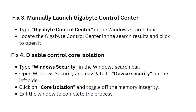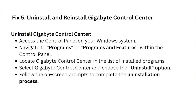Fix number four is to disable Core Isolation. Type 'Windows Security' in the Windows search bar and open it. Navigate to Device Security on the left-hand side, click on Core Isolation, and toggle off Memory Integrity. Exit Windows Security to complete the process.